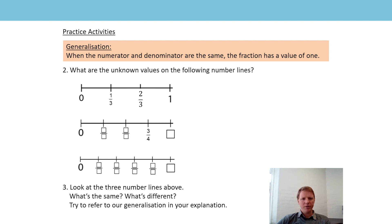The next number line - how many parts has it been split into? It's split into four equal parts. Some of you might have used the fraction that we are told, 3 quarters, to know the denominator of all of the fractions must be 4. So let's count up in quarters: 0, 1 quarter, 2 quarters, 3 quarters, 4 quarters - but at the end of our number line we can write 1, because 4 quarters - the numerator would be 4, the denominator would be 4, they're the same value, which is why we can also say the fraction has a value of 1.